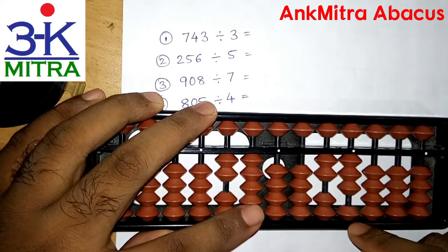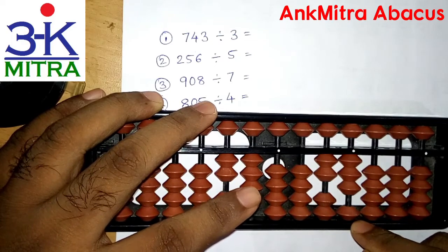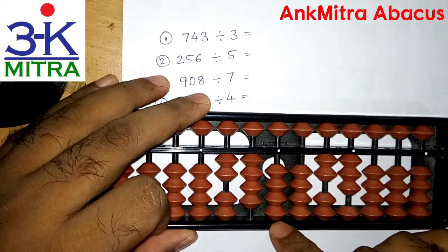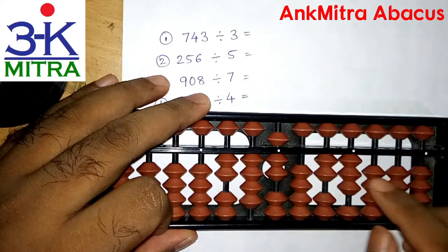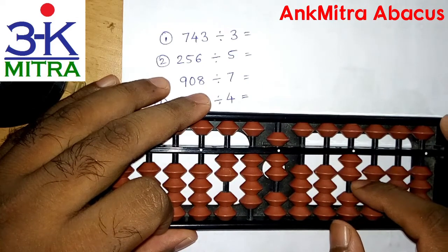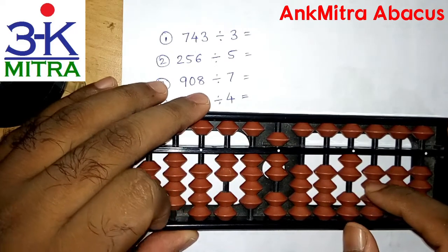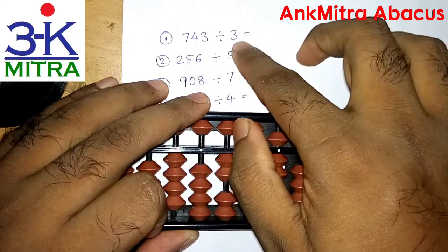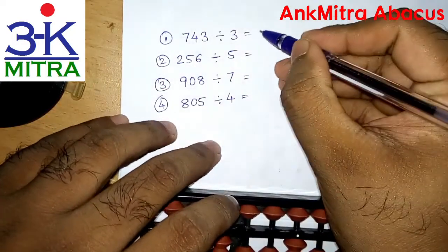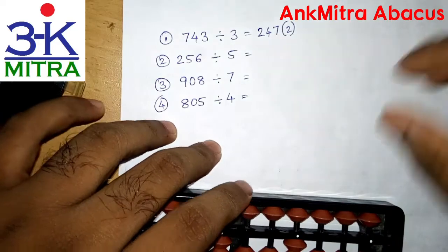Moving to the final rod of the question set, we have the number 23. Reciting the table of 3, we get 7 times 3 which is 21. 7 will be taken on the corresponding units place of the answer set, and 21 will be subtracted from the question set. The final number that we have is 2, which is smaller than our divisor and hence is the remainder. The answer for 743 divided by 3 is 247 with a remainder of 2, written as 247 (R2).